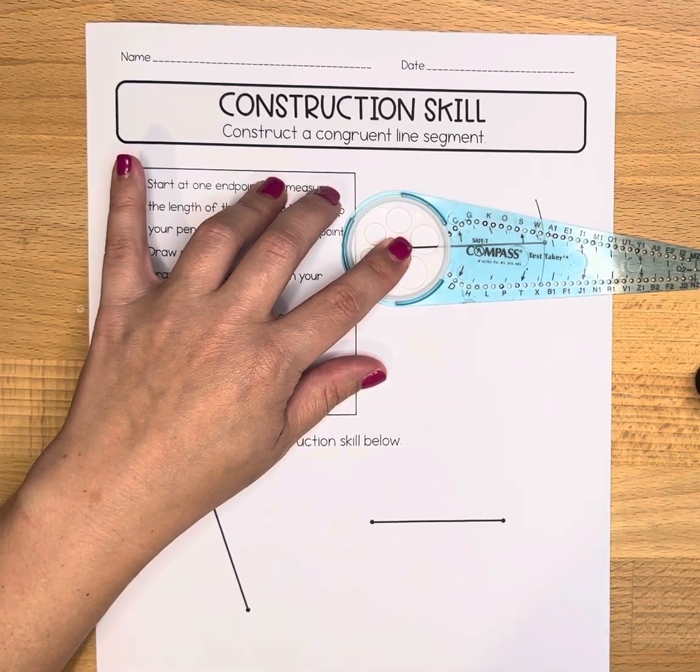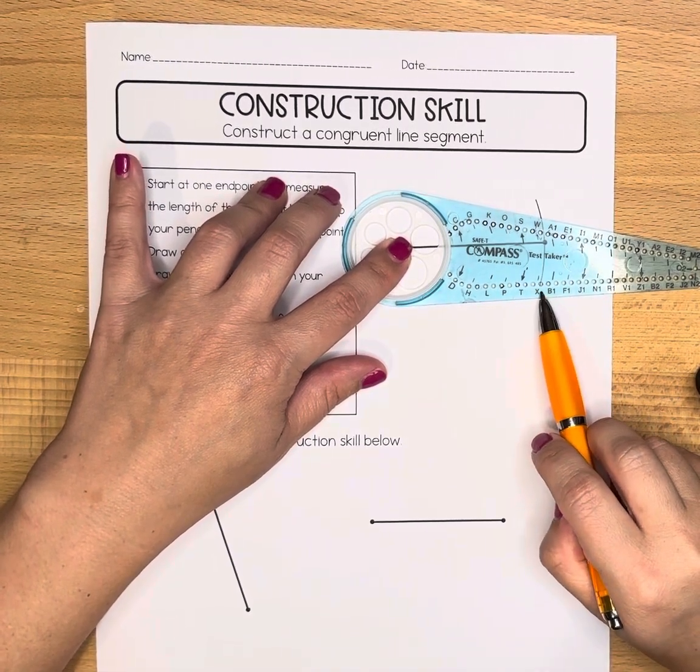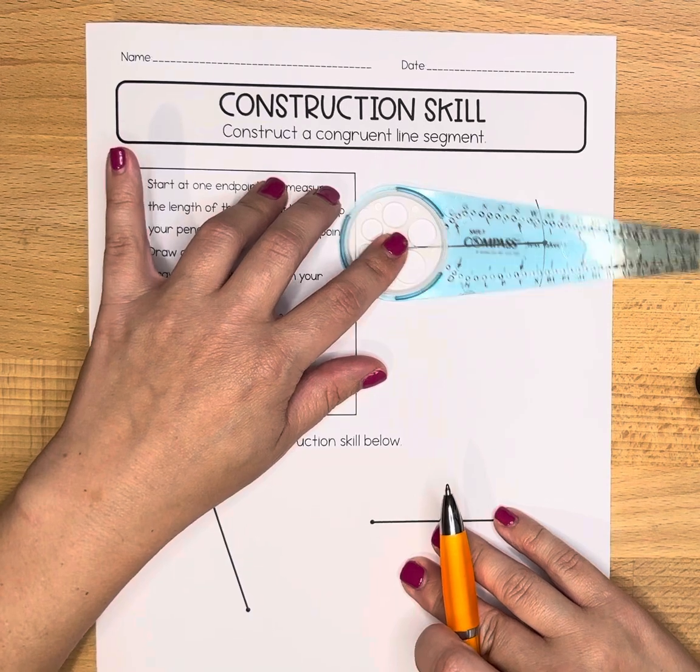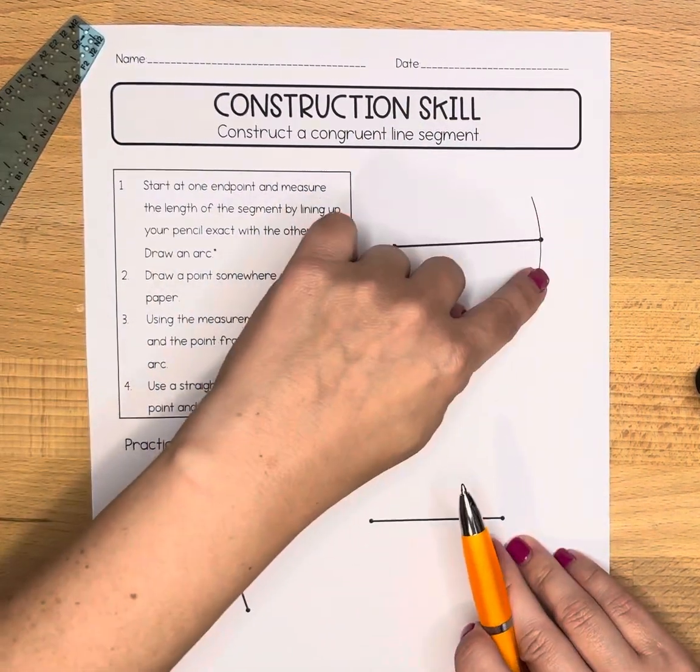I found that on my compass, mine happens to be this marking that's right after the letter X. You're going to remember whatever that marking or measurement is. You can see that arc went right through.